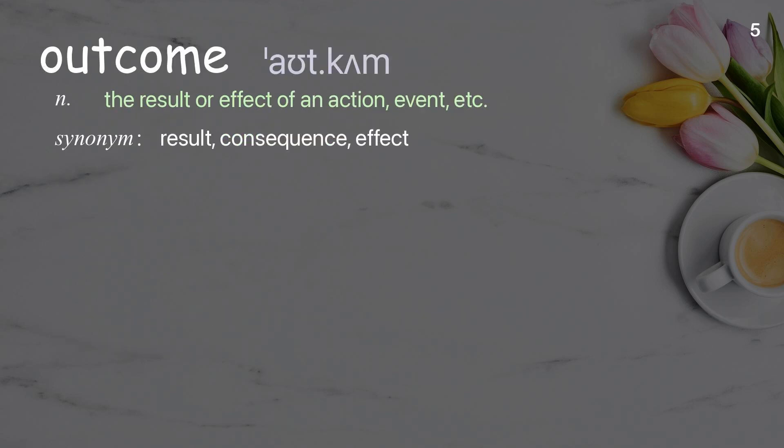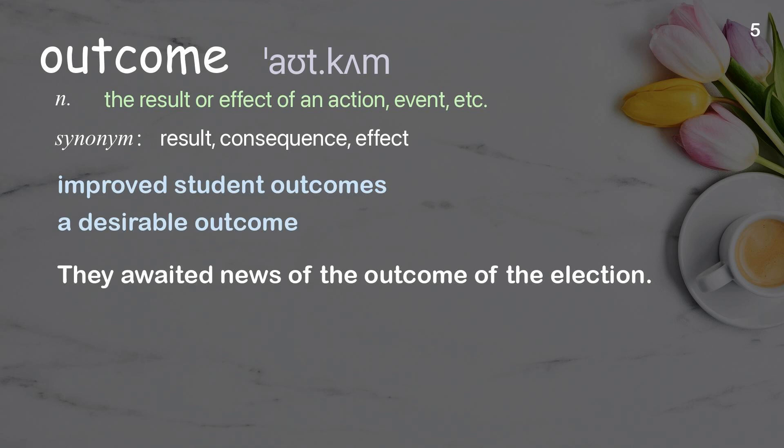Outcome: The result or effect of an action or event. Examples: Improved student outcomes, a desirable outcome. They awaited news of the outcome of the election.